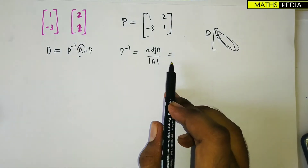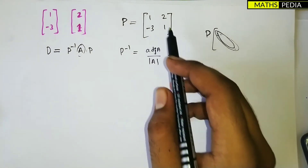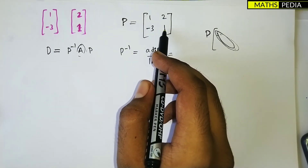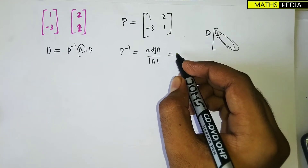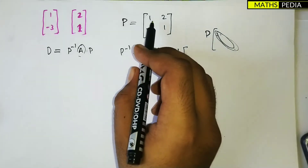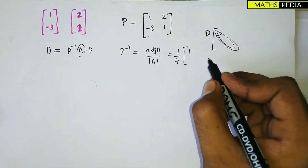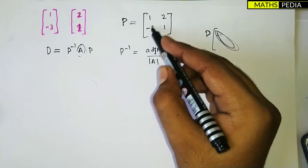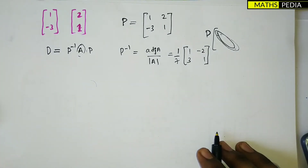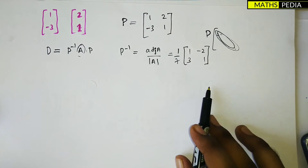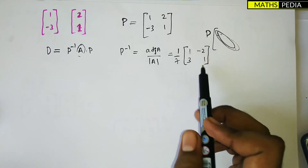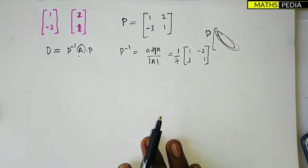By the normal method, P inverse equals adjoint(P) divided by determinant(P). The determinant of P is 1×1 − 2×(−3) = 1 + 6 = 7. The adjoint for a 2×2 matrix means interchange the diagonal elements and change the signs of the non-diagonal elements. So adjoint(P) = [[1, −2], [3, 1]], giving P⁻¹ = (1/7)[[1, −2], [3, 1]].